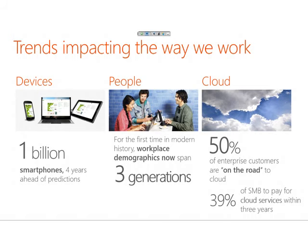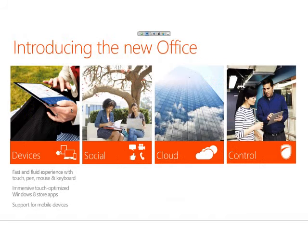The new Office is summed up by four pillars: devices, social, cloud, and control. On devices — we're creating a great experience on all sorts of devices. Office is great with mouse and keyboard as always, but we're also taking touch, stylus, pen, and ink into account. You'll see some of those features in the demo. The new Office is also very social — we think social includes having social activity be part of every part of how you work, with good representations of people and both asynchronous and real-time communications right at your fingertips.